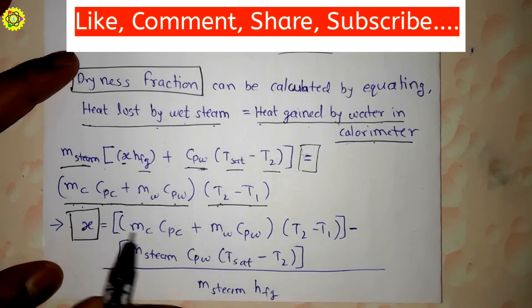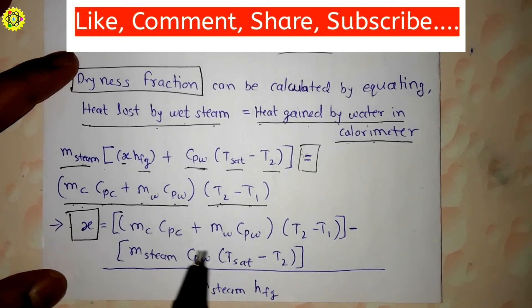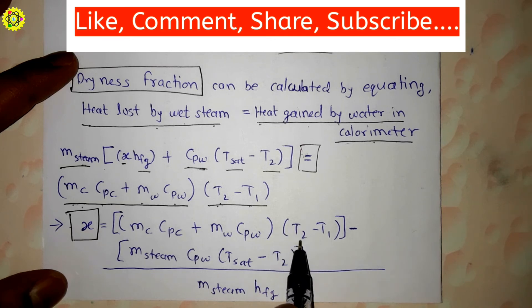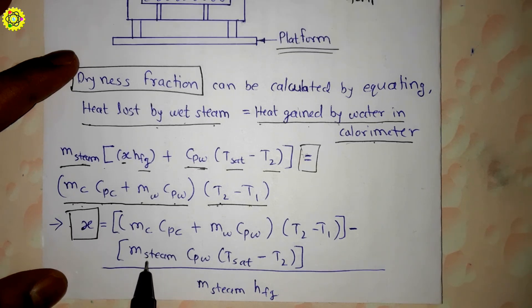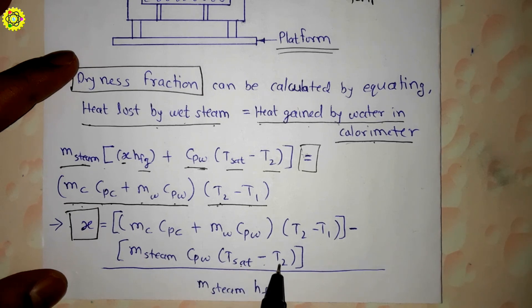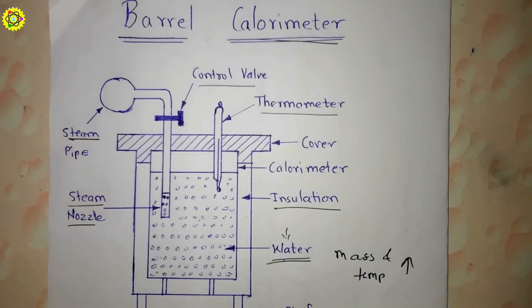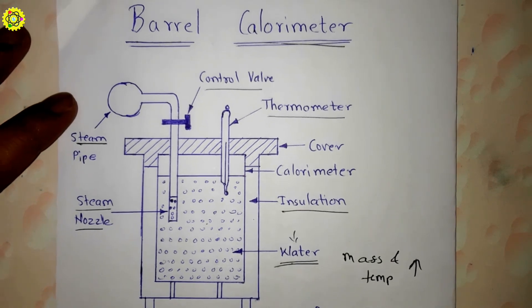After equalizing we will simplify this formula and we get here x, that is dryness fraction, is equal to: [(m_c·c_pc + m_w·c_pw)(T_2 - T_1) - m_steam·c_pw(T_sat - T_2)] / (m_steam·h_fg).